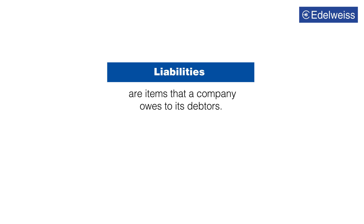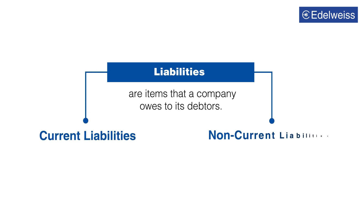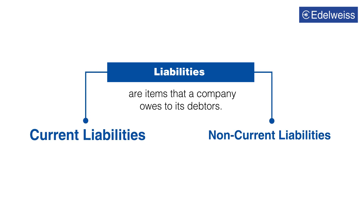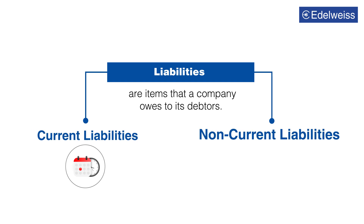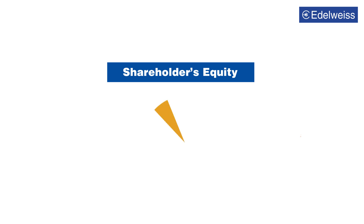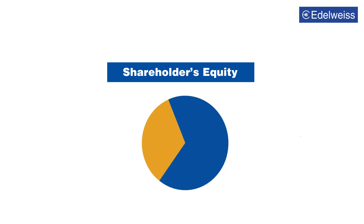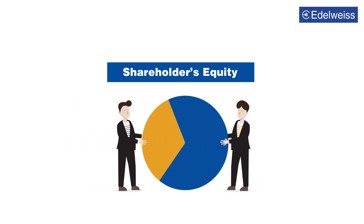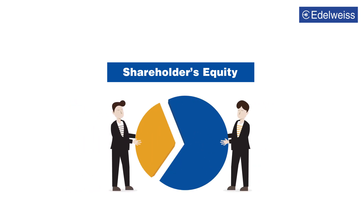Liabilities are the items that a company owes to its debtors. Liabilities are also divided into current and non-current. Current liabilities are the ones that the company needs to fulfill in the next year, while non-current liabilities represent long-term debt.